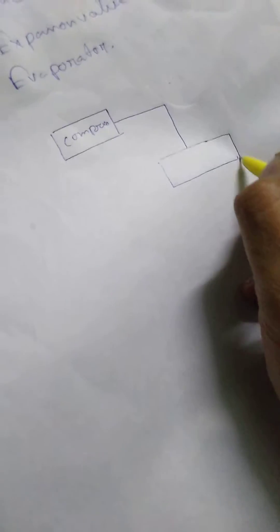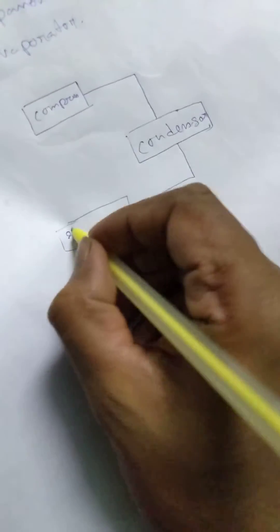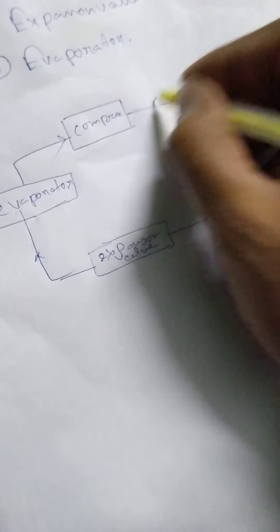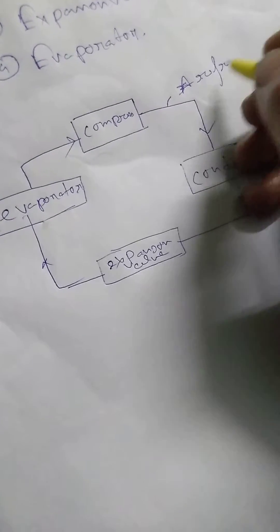It goes from compressor to condenser, then to expansion valve, and then to evaporator. Then again it goes back to compressor. This is where the refrigerant circulates through the system.